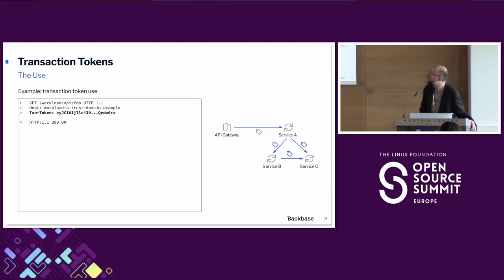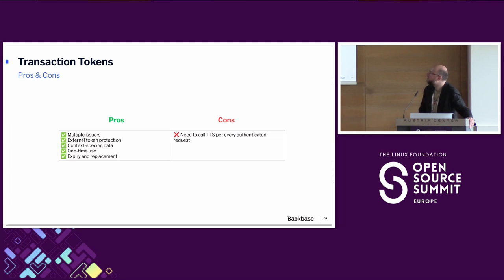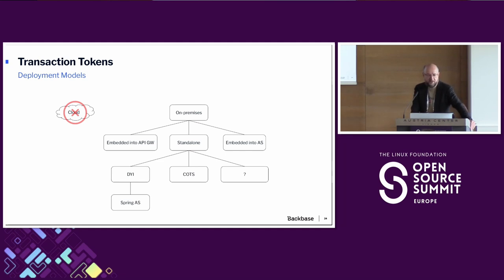For how to use these new tokens: you might expect an Authorization Bearer header, but we introduced a new header instead, because the purpose and philosophy differs from bearer tokens. They can also be used in combination with the Authorization Bearer scheme. This new architecture solves all the problems mentioned at the start, but the downside is that for each call you need to contact the transaction token service for a token exchange — which is why we must pay extra attention to deployment models, scalability, performance, and latency.